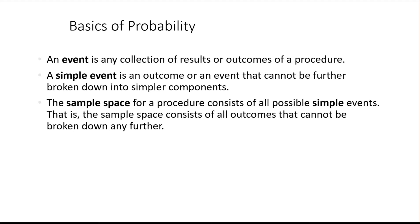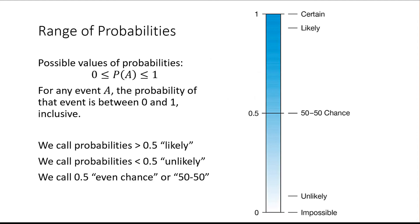Often when you're doing probability problems, it's really helpful to write out the sample space for an event, which is writing out every possible simple event that could happen. So if we're thinking about the die, the sample space would be listing out the numbers 1, 2, 3, 4, 5, and 6 — everything that could happen. That's a really good first start if you don't know where to go.